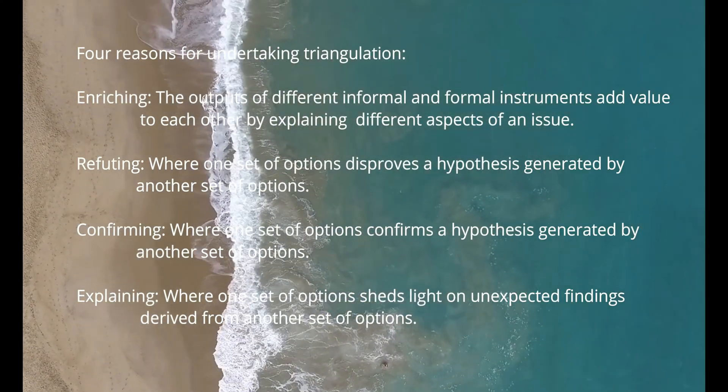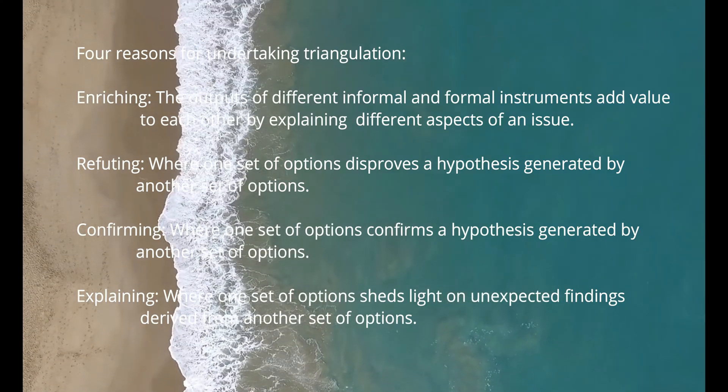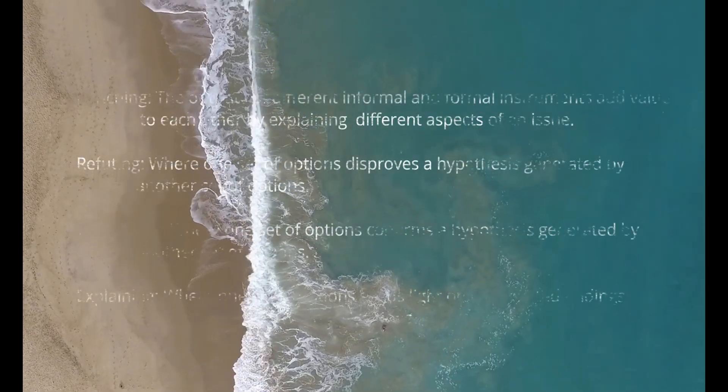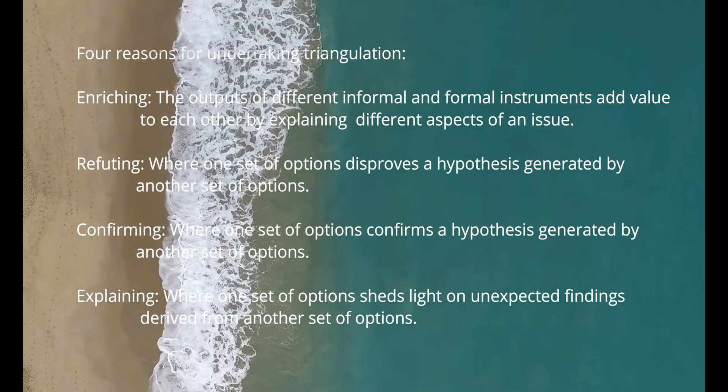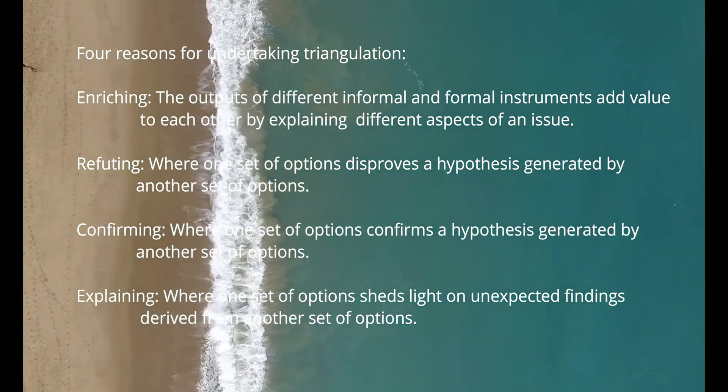Another reason according to these authors is refuting, where one set of findings disproves a hypothesis generated by another set — not a very common use. A third reason is confirming, where you want to confirm a hypothesis generated by another set of findings. Finally, explaining is where one set of findings sheds light on unexpected findings from another set — similar to mixed methods research, where qualitative data follows quantitative data to explore why people responded in certain ways.